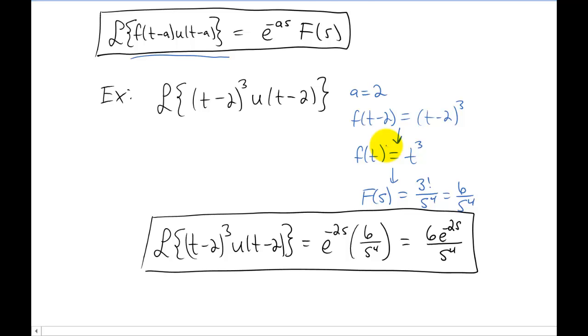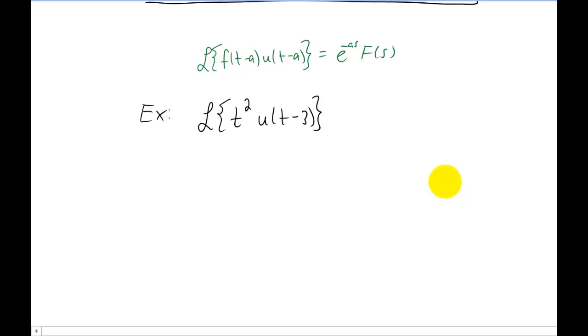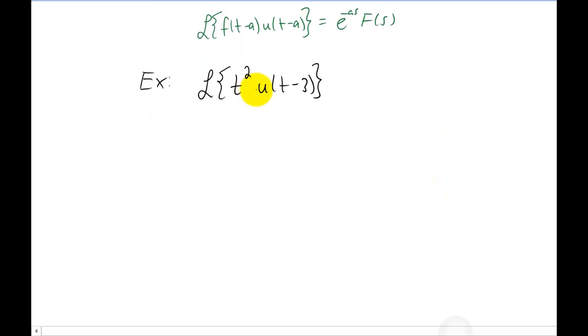Of course you're probably asking what happens if you have an example where you have a function multiplied by a step function. But those two functions don't have the exact same shift like they did on the last example. Well as it turns out, we can actually still use this same formula to do this if we want to.